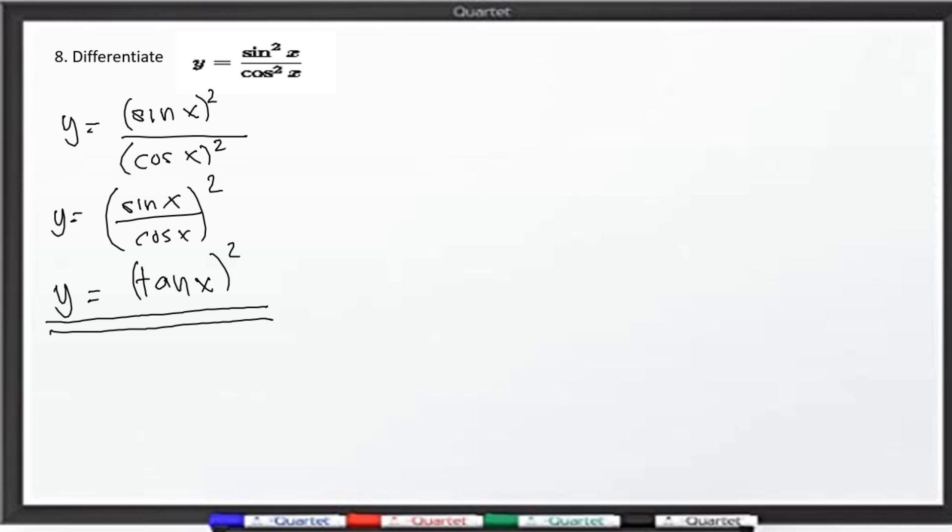Mag-chain rule lang po tayo dyan. Ang sabi ng chain rule: We have the outside, derivative of the outside, copy the inside, copy the inside, and then multiplied by the derivative of the inside. Iyan po ang chain rule. So lagyan po natin ng clouds. Derivative of the outside, copy the inside, times the derivative of the inside.